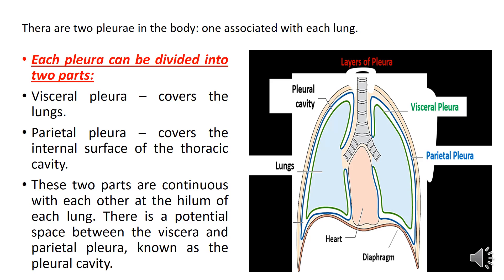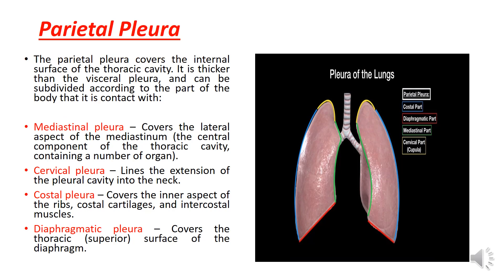The pleura has two layers: a visceral layer which covers the lungs and a parietal layer which covers the internal surface of the thoracic cavity. The two layers are continuous with each other at the hilum of the lung. The parietal pleura can be subdivided into the following parts: the cervical pleura, which projects through the thoracic inlet into the root of the neck about 3 centimeters above the first costal cartilage and covers the apex of the lung; the costal pleura, which lines the inner aspect of the ribs, costal cartilage, and intercostal muscles; the mediastinal pleura, which lines the corresponding surface of the mediastinum; and the diaphragmatic pleura, which covers the superior surface of the diaphragm.